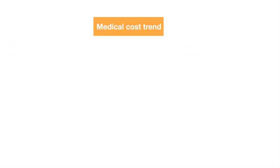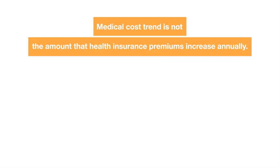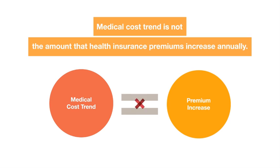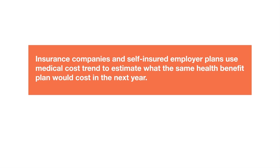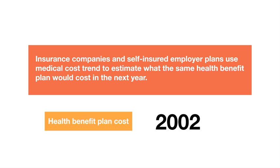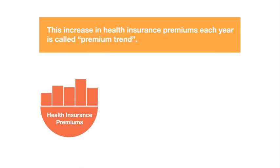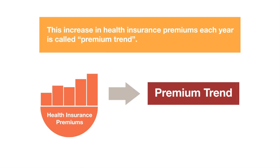A common misconception is that medical cost trend is the amount health insurance premiums increase annually. These concepts are related, but not the same. Insurance companies and self-insured employer plans use medical cost trend to estimate what the same health benefit plan would cost in the next year. This increase in health insurance premiums each year is called premium trend.